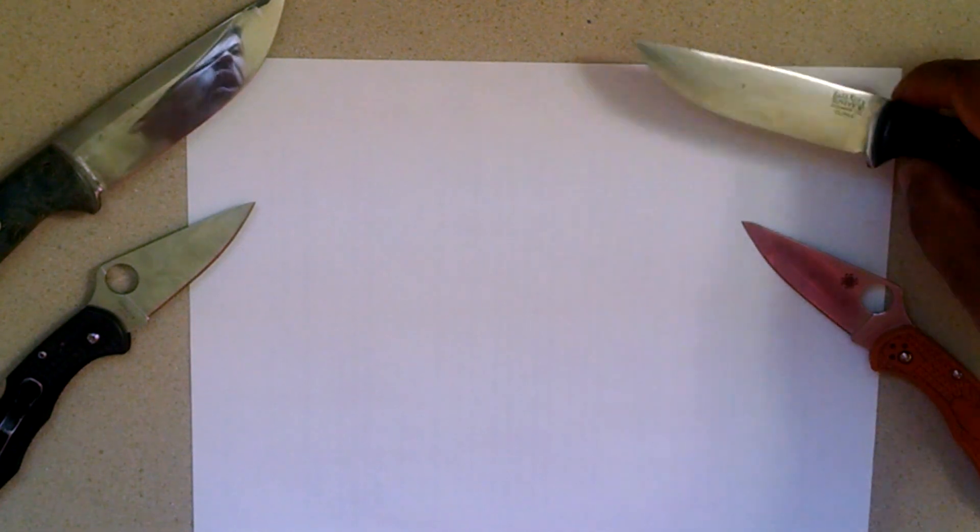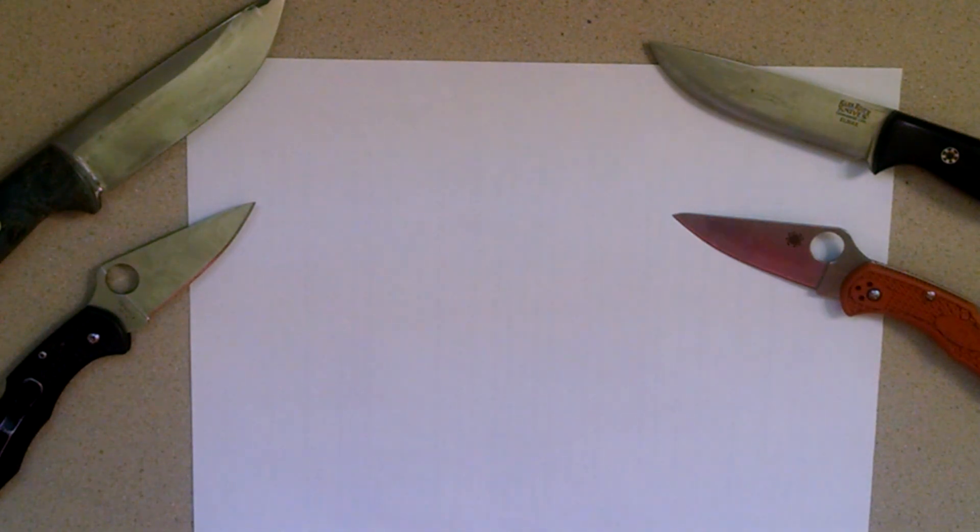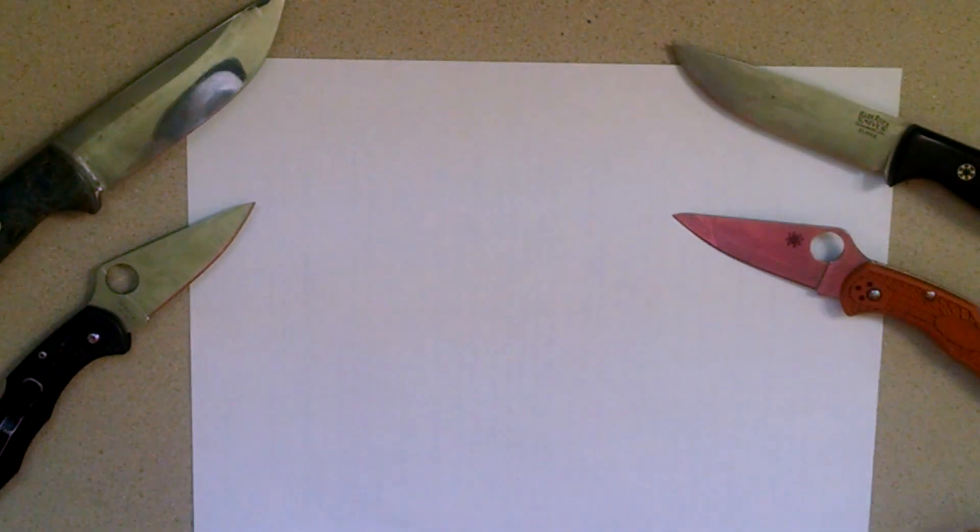This steel right here has close to 2% carbon. This has almost 1.5%. And they're chock full of all these carbide formers such as vanadium. That's probably one of the biggest because it's the hardest, smallest carbide former. I believe niobium has maybe a little bit more hardness but it's not quite used too much in cutlery.